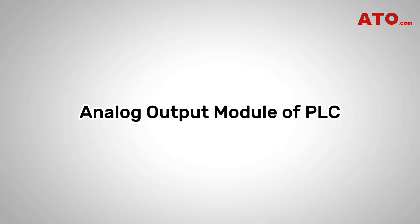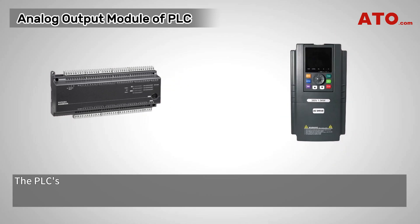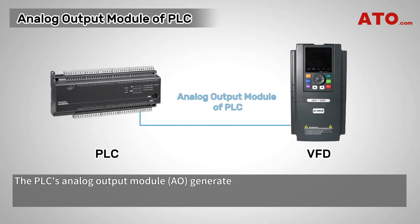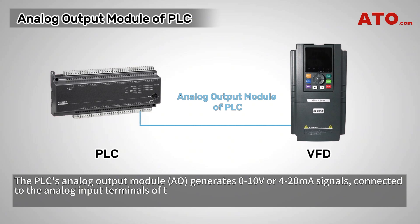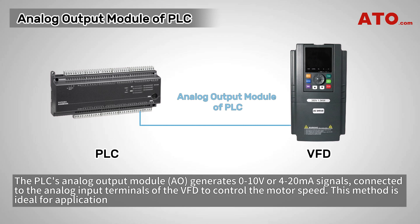The second method is the Analog Output Module of PLC. The PLC's analog output module generates 0-10 volt or 4-20 milliamp signals connected to the analog input terminals of the VFD to control the motor speed. This method is ideal for applications that require continuous speed adjustment.